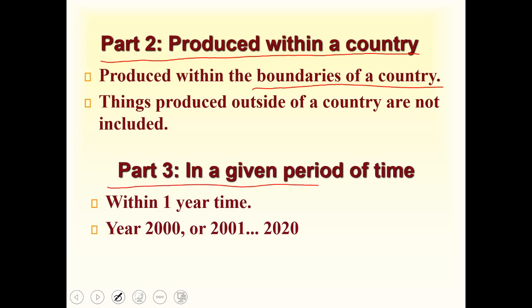The third part says 'in a given period of time.' GDP is always quoted in terms of a particular year. For example, the GDP of the United States in 2019 was 19 trillion dollars. So when economists talk about GDP, they specify both the country and the year — for instance, the GDP of Pakistan in 2010 was a certain number of billion dollars.